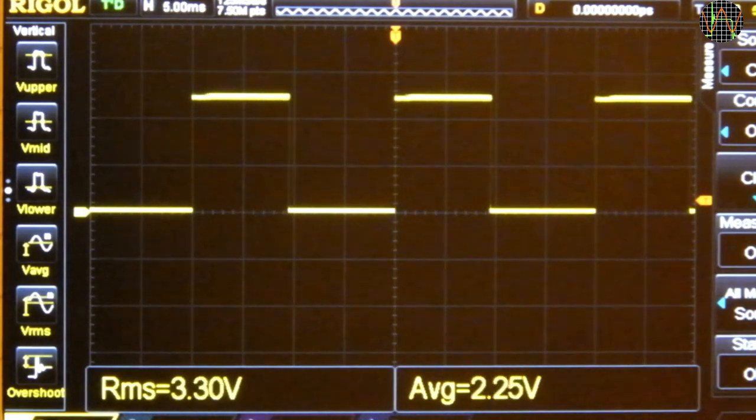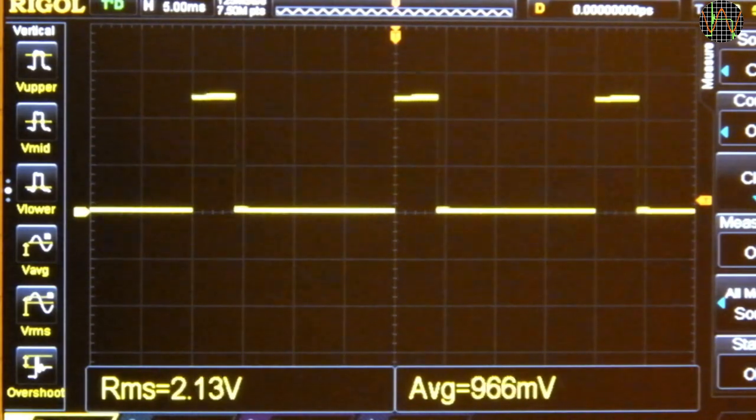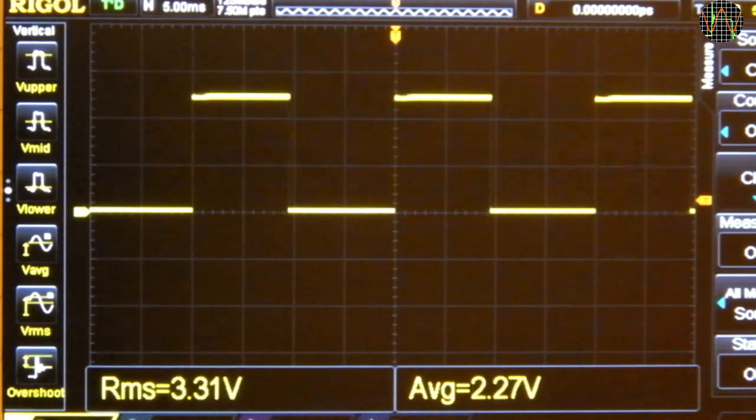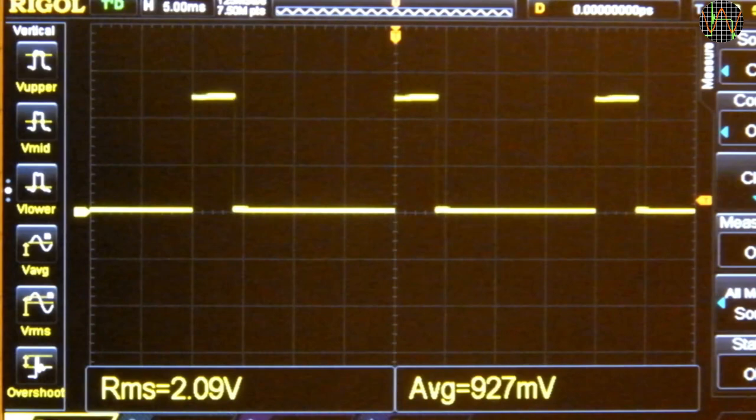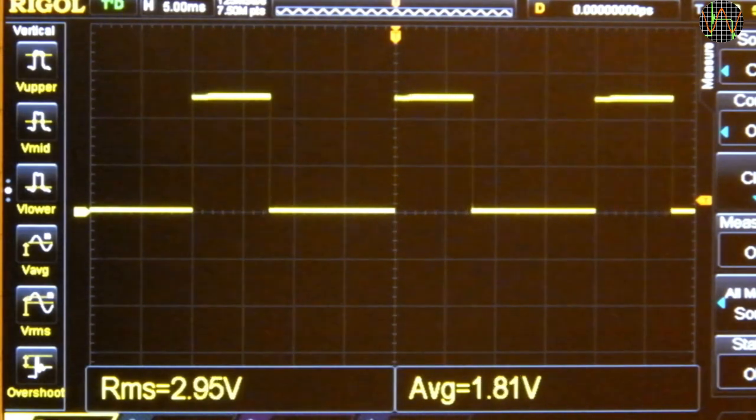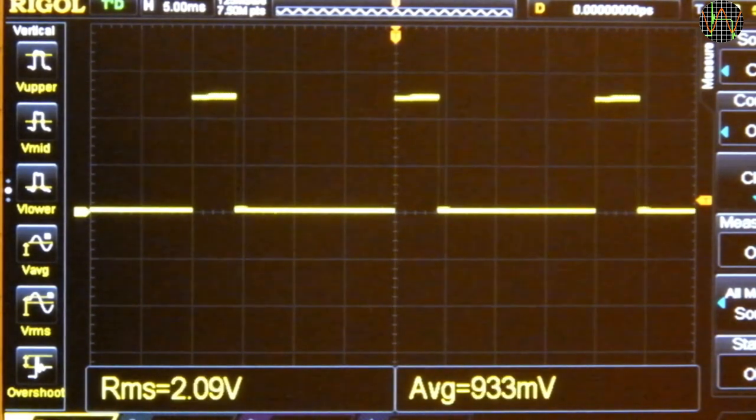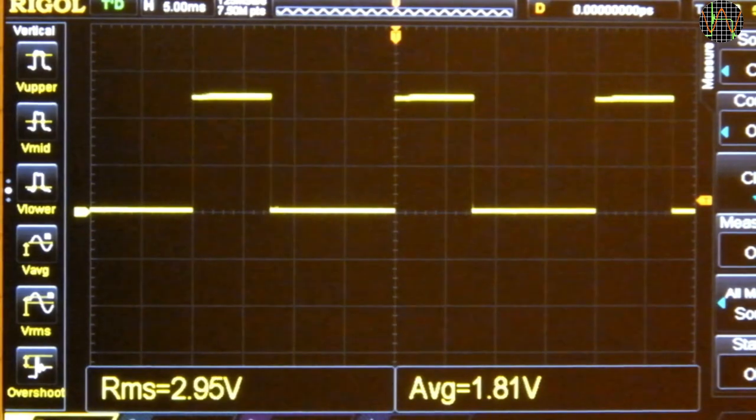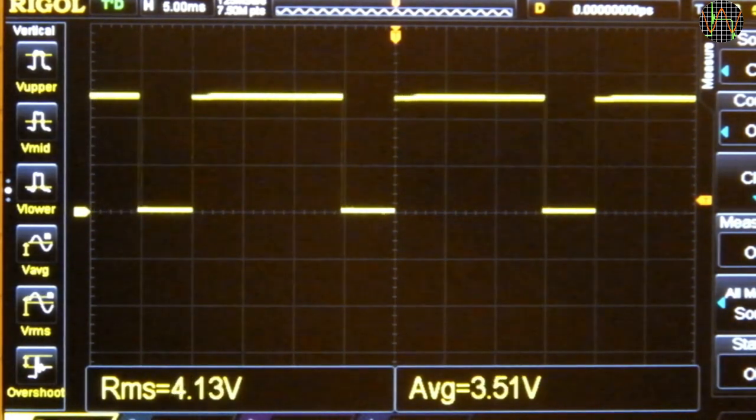So I thought it might be interesting to investigate what different waveforms do to true RMS and averaging meters but the math behind it gets pretty dense very quickly. So I thought about a better way and developed a waveform analyzer. And the best part is that you can download it from my github page and do experiments yourself. But since this video is pretty long already, I stop here and introduce the waveform analyzer in the second part. Until then, thanks for watching this part.